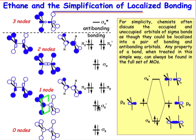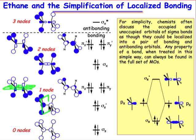Just above that, we still have one node, but now we're introducing 2pz orbitals on each carbon. The node lies in the plane where the node of the pz orbital is, so everything above that plane has the same sign and everything below also has the same sign. Even though there's only one node, these are higher in energy because π bonding is involved — side-by-side bonding of the pz orbitals — and π bonding is weaker than σ bonding.